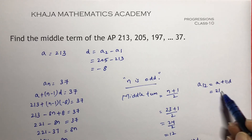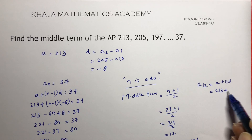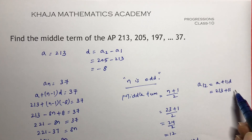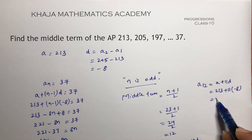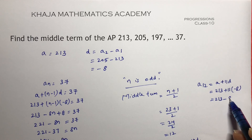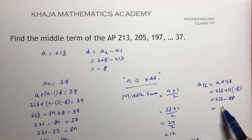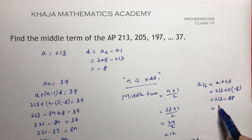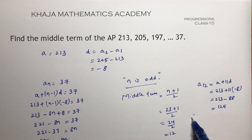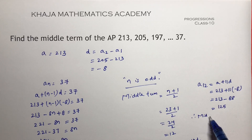So a₁₂ is 213 plus 11 into minus 8, which is 213 minus 88, equals 125. Therefore the middle term is 125.